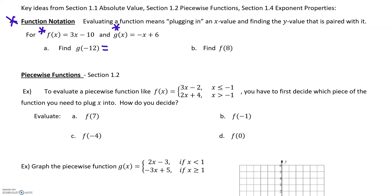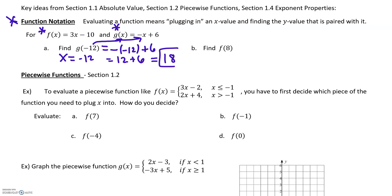In part a, we're going to find g of negative 12 — evaluate the function g at x equals negative 12. We go up to the rule for g and replace the x with negative 12. So we have the negative of negative 12, which is 12, plus 6. Our answer is 18.